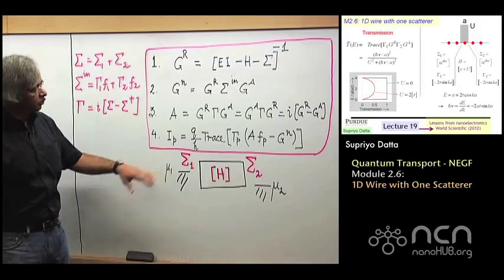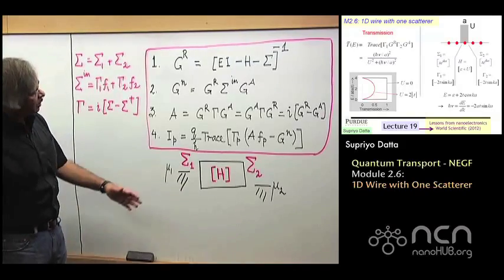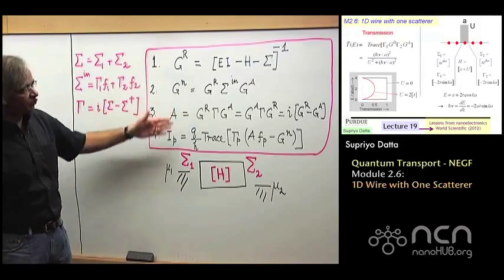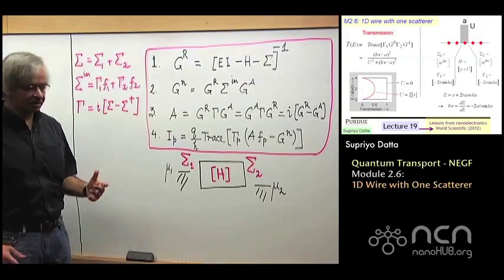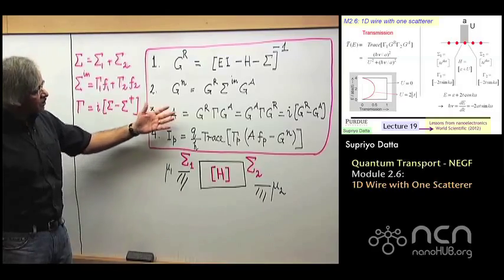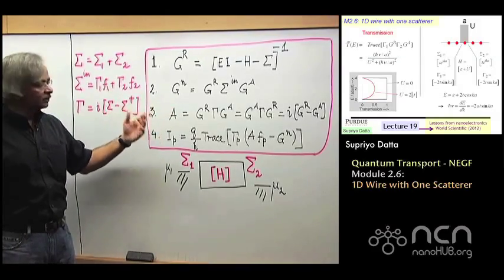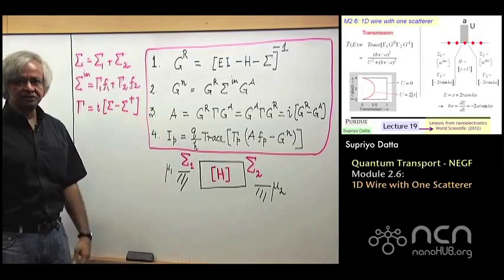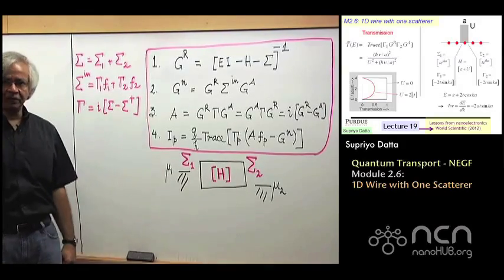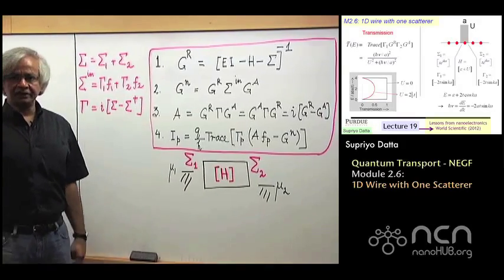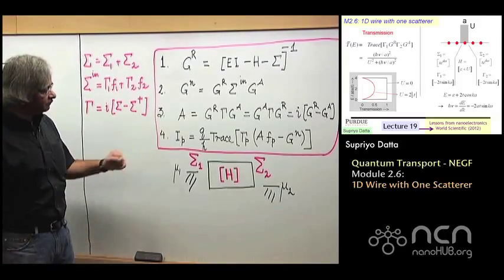Week 2 — that is this week — was about obtaining the set of equations called the NEGF equations, which actually allow you to calculate current, density of states, electron density, and all kinds of observable quantities of interest that you can compare with experiment.